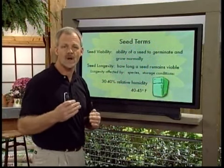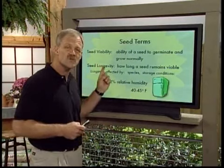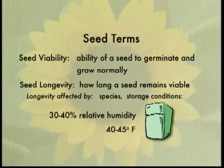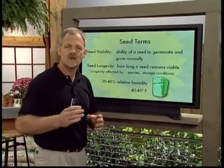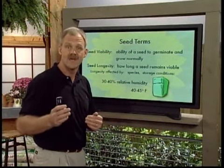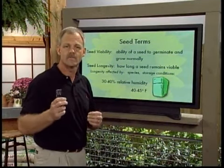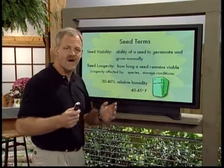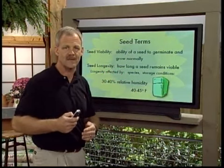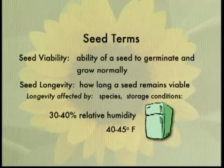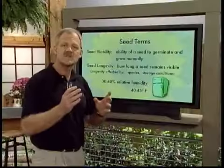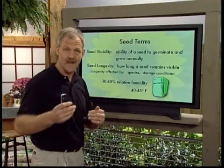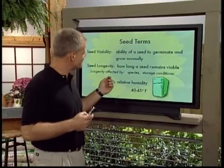There are some important seed terms we need to be aware of as we talk about propagation. The first is seed viability, which means a seed that will germinate and grow normally. Not all seeds that are alive will germinate and grow normally — and what you really want are those viable seeds. The second term is seed longevity: how long a seed remains viable. The storage capacity of the cotyledon influences how long the seed remains viable.